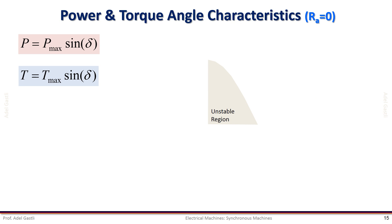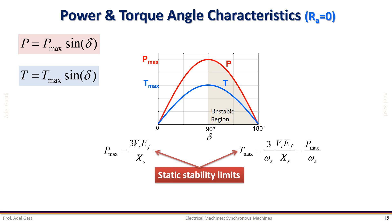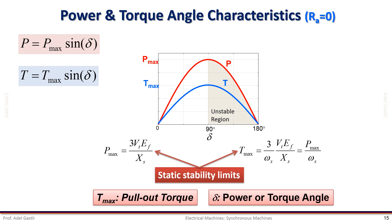These two equations are very important equations describing the power and torque characteristics of a synchronous machine. We can use them to plot the active power and developed torque as a function of the angle delta as given by this figure. Notice that the maximum power and maximum torque occur at an angle delta equal to 90 degrees. Above 90 degrees the machine becomes unstable because the torque produced cannot keep the rotor synchronized with the stator flux — the maximum torque and maximum power are the static stability limits. The maximum torque is called the pull-out torque because above this torque the machine pulls out of synchronism and its speed will decrease to zero. Therefore the angle delta is called the power or torque angle because by controlling this angle we can control the power and torque of the synchronous machine.